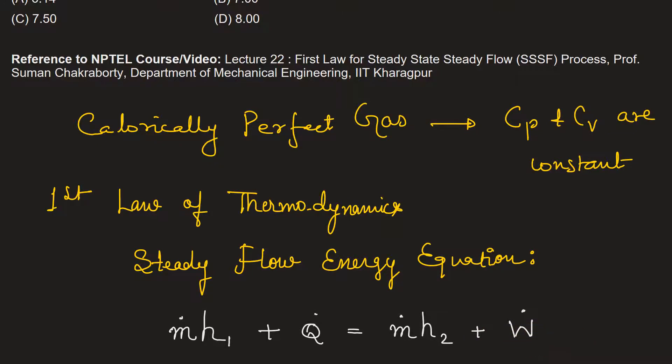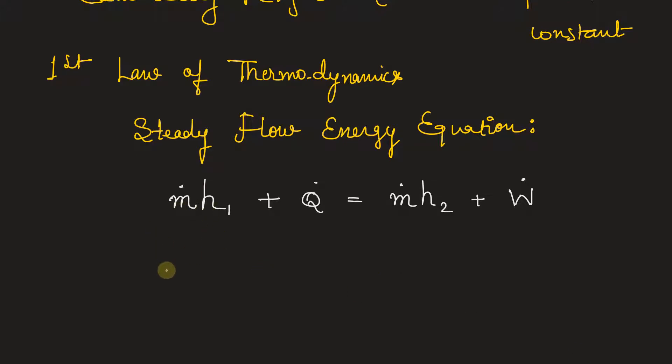So from here, we can write the mass flow rate is equal to w minus q divided by h1 minus h2. h1 can be written as Cp T1. So if we take Cp common, that is specific heat capacity at constant pressure, this will be T1 minus T2.